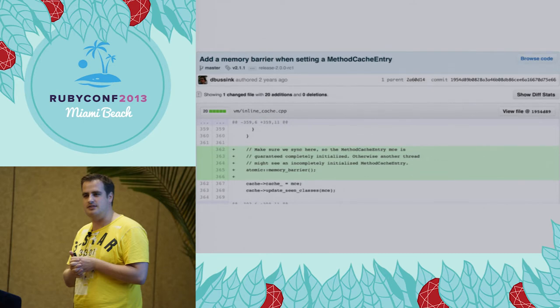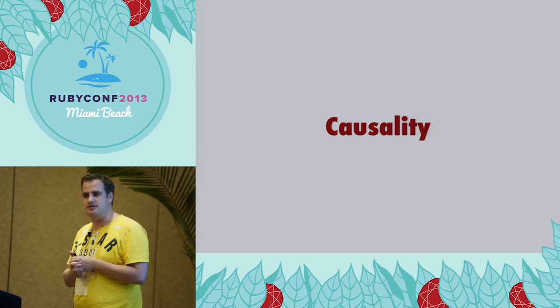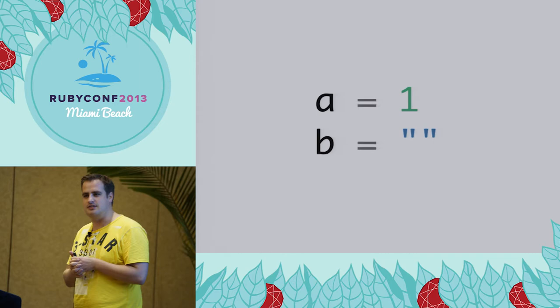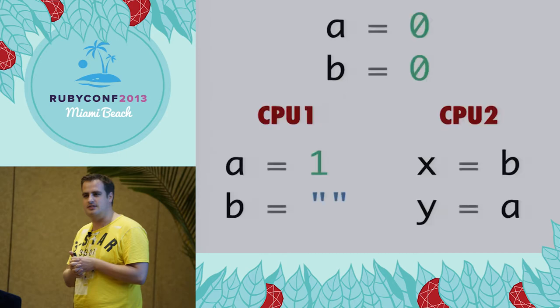One of the things I want to talk about first is a very basic concept called causality - things happen in a certain order in your computer. Let's talk about reasonably trivial code where we have a number and a string and we just set variables A and B. We're going to make it a little bit more complex by adding parallelism and concurrency to the mix. We now make A and B shared variables. Everybody knows shared mutable state is bad - this talk will hopefully give you a better idea of what other concerns come with it.